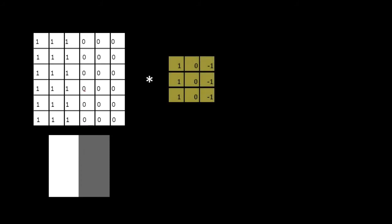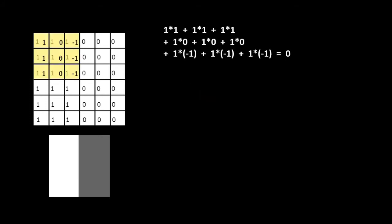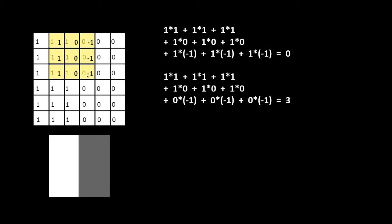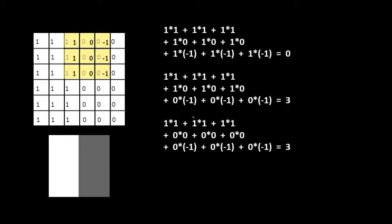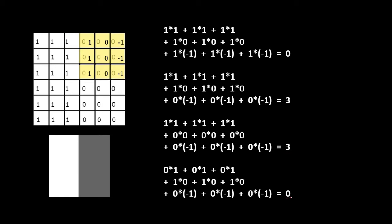Let's say we have a simple image where 1 represents white and 0 represents black. You can see there is a vertical edge in this image. We can convolve this image with a filter that acts as a vertical edge detector. Performing the convolution operation gives us: the first value is 0, then we shift the filter 1 pixel to the right and get 3, then again shift and get 3, then shift again and get 0.